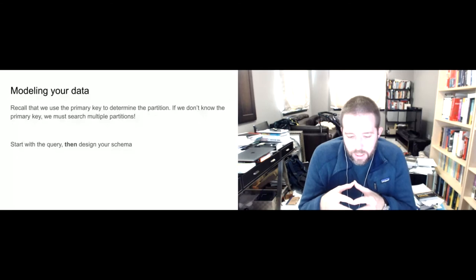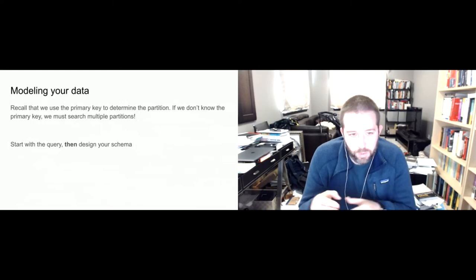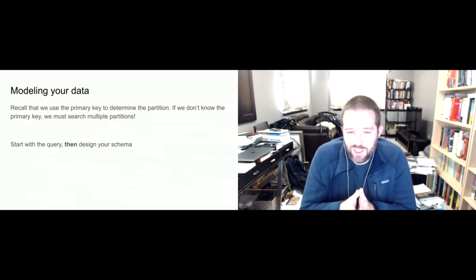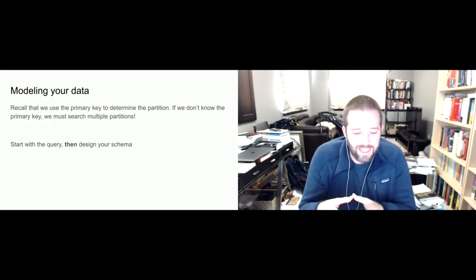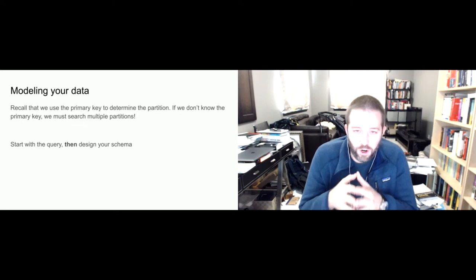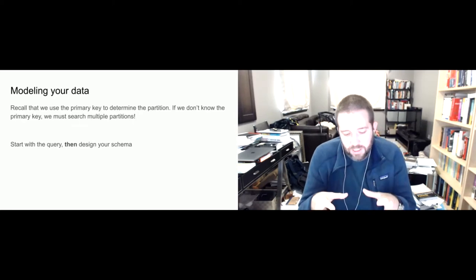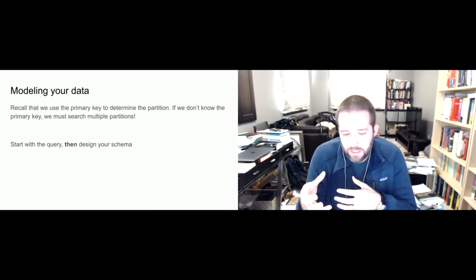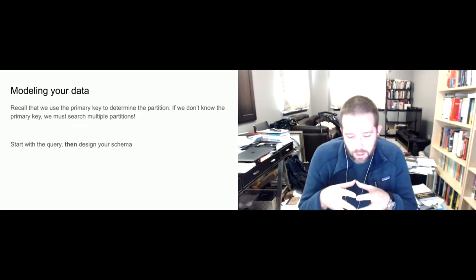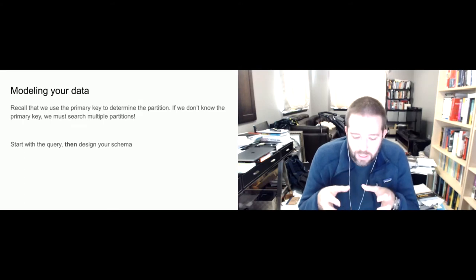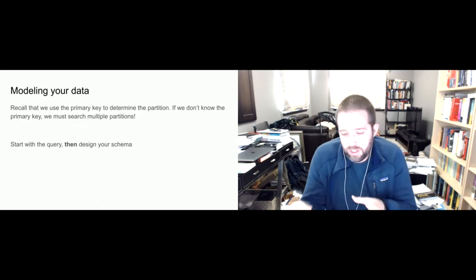We use the partition key to determine the partition. If we don't have enough information to go to a precise partition, we're going to have to hit multiple partitions — this is slow. This is why any documentation on data modeling in Cassandra always says: start with the query and let that drive your data model. At the application level, think about what data you have access to and how you can use that to generate your partition key to get the data you want.